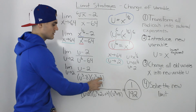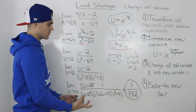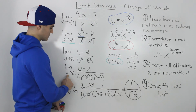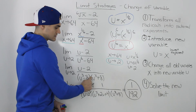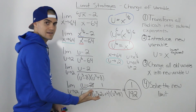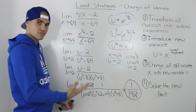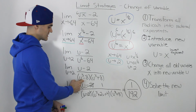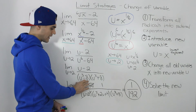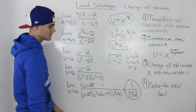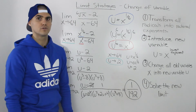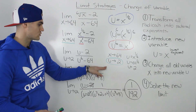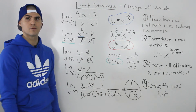Note that u to the power of 3 plus 8 could also be factored as a sum of cubes, but it's unnecessary — substituting 2 gives 16, not 0, so we can leave it as is. We only need to factor brackets that give 0 upon substitution. Keep in mind that questions requiring two types of factoring can come up on your test.